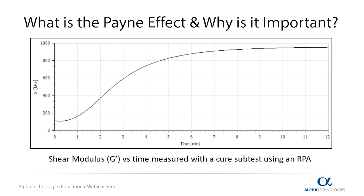Here, you can see a typical modulus versus time graph measured with a cure test using an RPA. As the material is cured, the stiffness — analyzed through the modulus — increases in an S-shape, which is very common for a polymer carbon-black filled material.